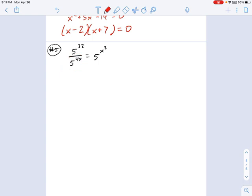For one thing, when you're using exponential equality, the principle of exponential equality, it always wants one exponent on one side, one exponent on the other. So can we reduce this thing right here to just a single exponent? And if you remember the quotient rule, you'll realize this can be written as 5 to the 32 minus 4x equals 5 to the x squared, that's the quotient rule.